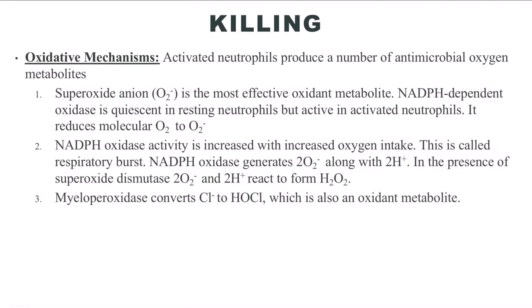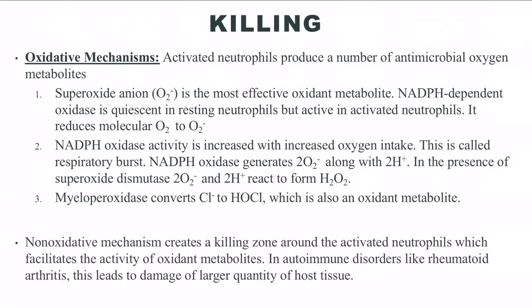The oxidative mechanism of bacterial killing is achieved by the release of antimicrobial oxygen metabolites like the superoxide anion, hydrogen peroxide, hypochlorous acid, free hydroxyl radicals, and singlet oxygen molecules from activated neutrophils. NADPH oxidase is an enzyme that is present in resting neutrophils and gets triggered following neutrophil activation. This enzyme stimulates increased oxygen intake into phagocytes, also called the respiratory burst. It converts molecular oxygen into superoxide anions. Superoxide anions combine with two H+ ions to form hydrogen peroxide under the action of the enzyme superoxide dismutase. By this whole mechanism, two oxidants — superoxide anion and hydrogen peroxide — have been generated.